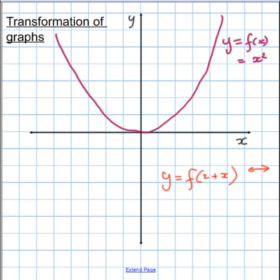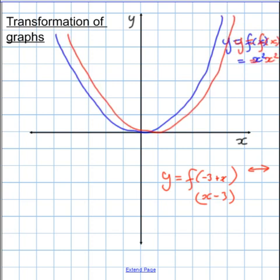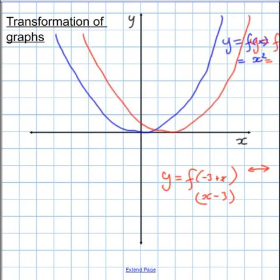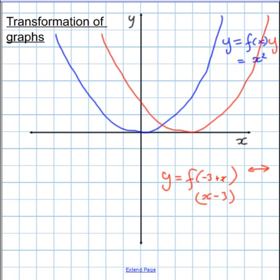Had it been a minus number, so for instance minus three add x, or alternatively it could be x minus three, they mean one and the same thing, then I'd have shifted it three units, one two three units to the left.